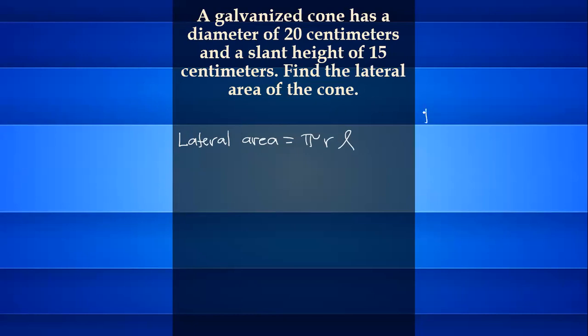First, calculate the radius. Radius equals diameter divided by 2. The diameter given is 20 cm, so divided by 2 equals 10 cm.